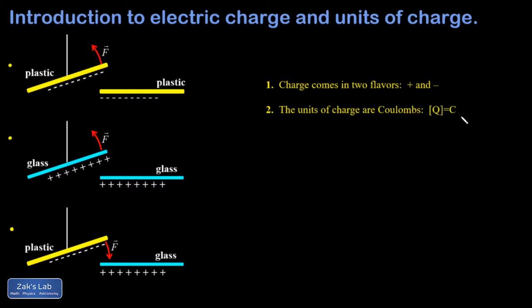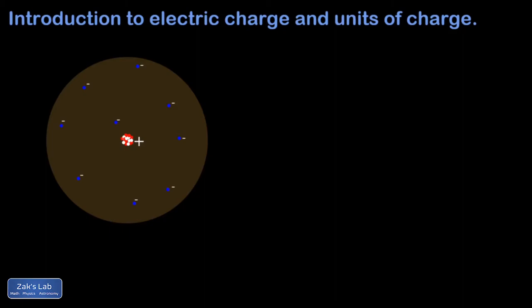Next we'll look at the physical origin of charge, and to do that we have to go all the way down to the atomic level. An atom is made of a positive nucleus with electrons orbiting around the nucleus in a cloud that has a diameter about a hundred thousand times as big as the nucleus. Our diagram is not quite to scale, because the nucleus wouldn't even be visible if I tried to scale it properly.